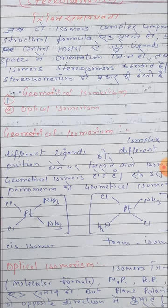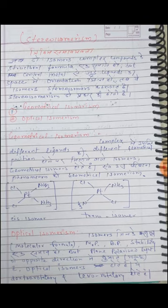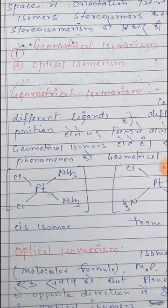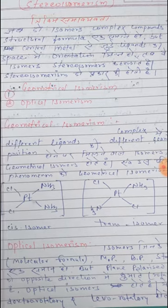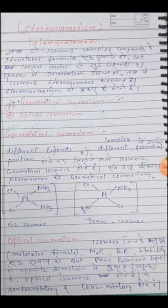Geometrical isomerism انہیں coordinate compounds میں دیکھنے کو ملتی ہے جن میں different ligands کی position change کرنے پر ligands کی arrangement ہوتا ہے۔